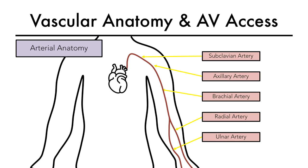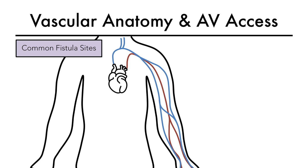Now let's review the common dialysis access sites in the arm. Access is always created using distal veins first, as long as they are adequately sized and healthy. This is done so as to preserve the proximal veins for potential future access. So from distal to proximal, the three most common sites for AV fistula creation are radiocephalic in the wrist and brachiocephalic in the distal arm.